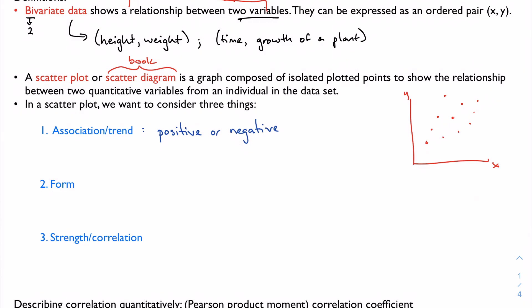When we talk about form, we're usually talking about the type of function that best fits the data. Most of the time we're talking about linear, especially in this class, but we can have more than just linear correlation.